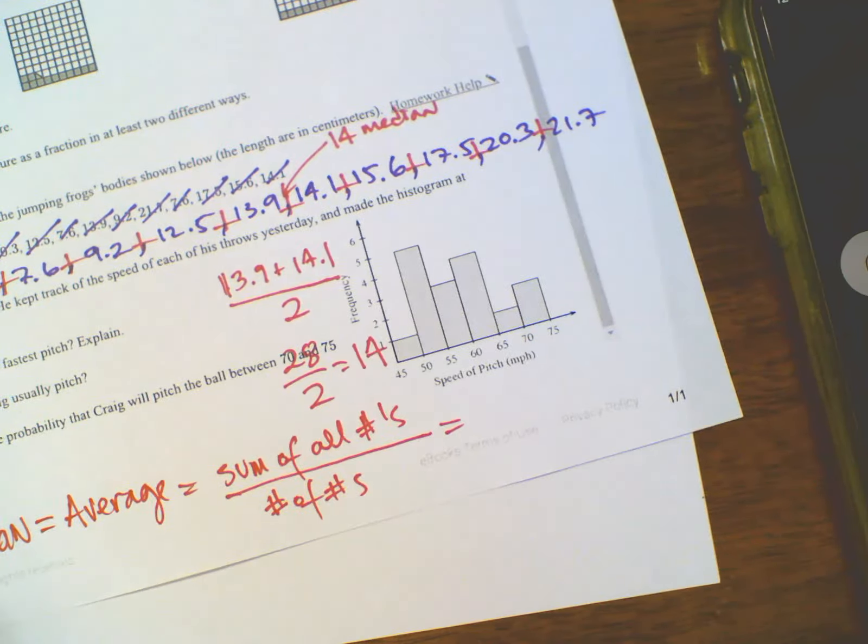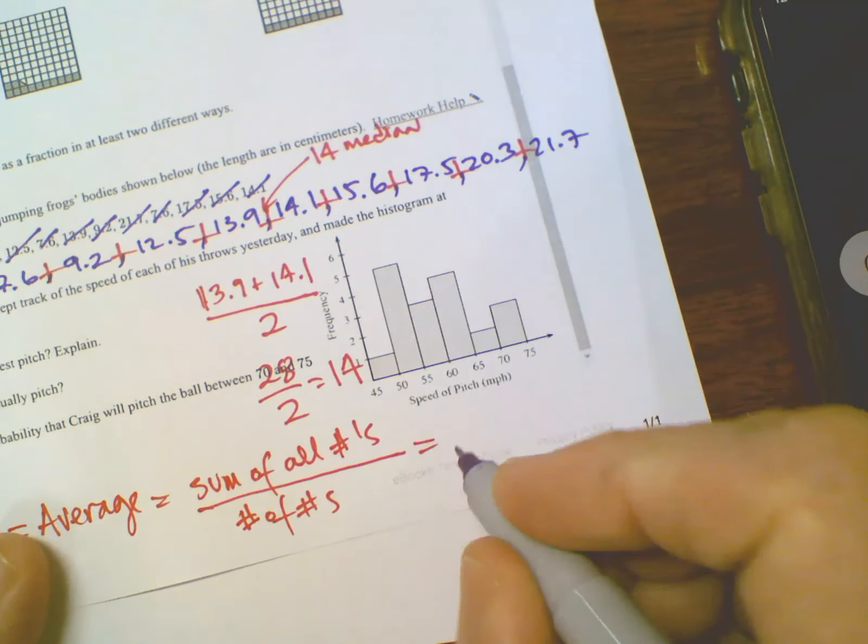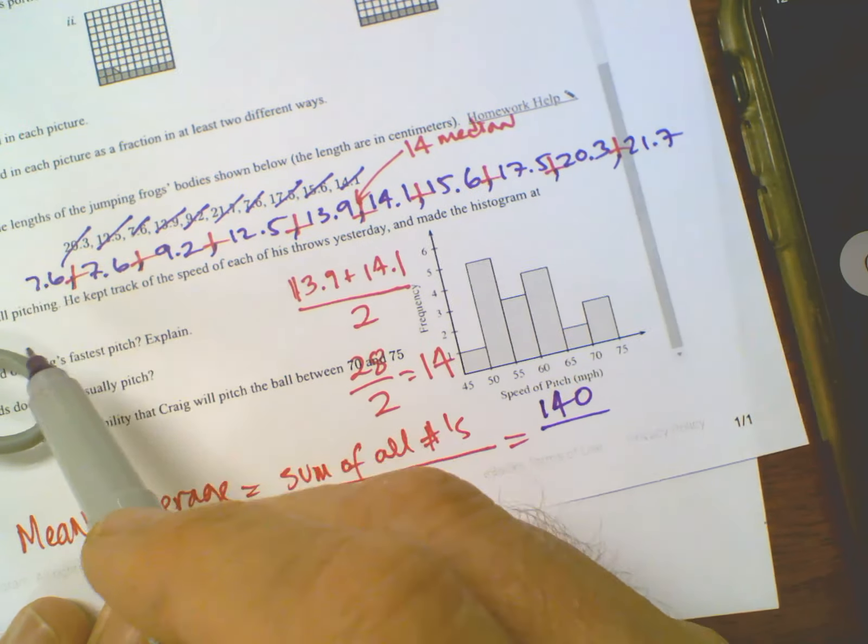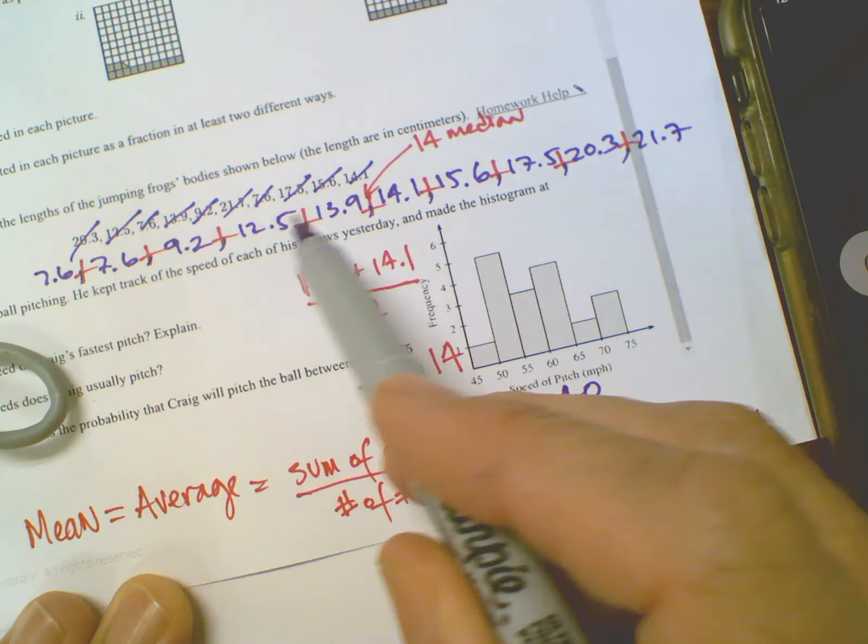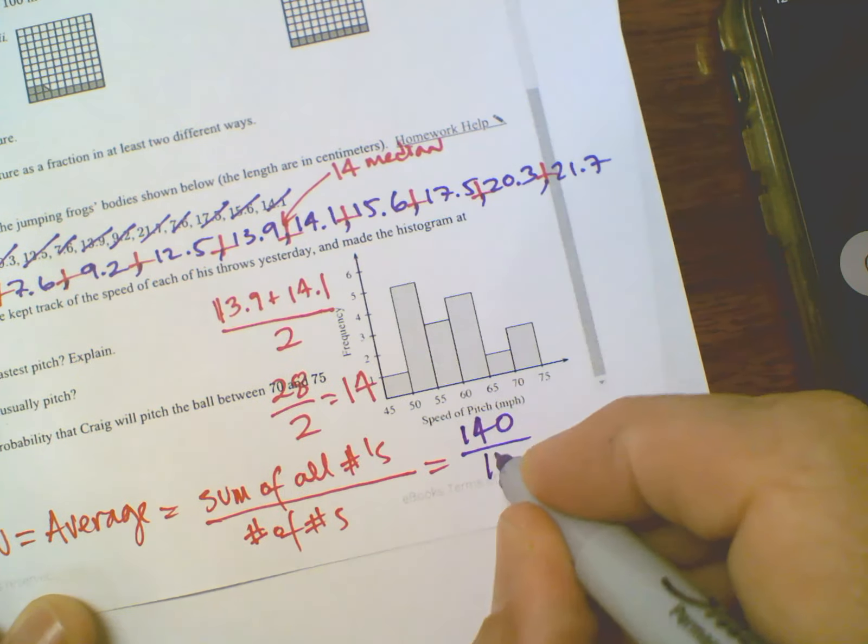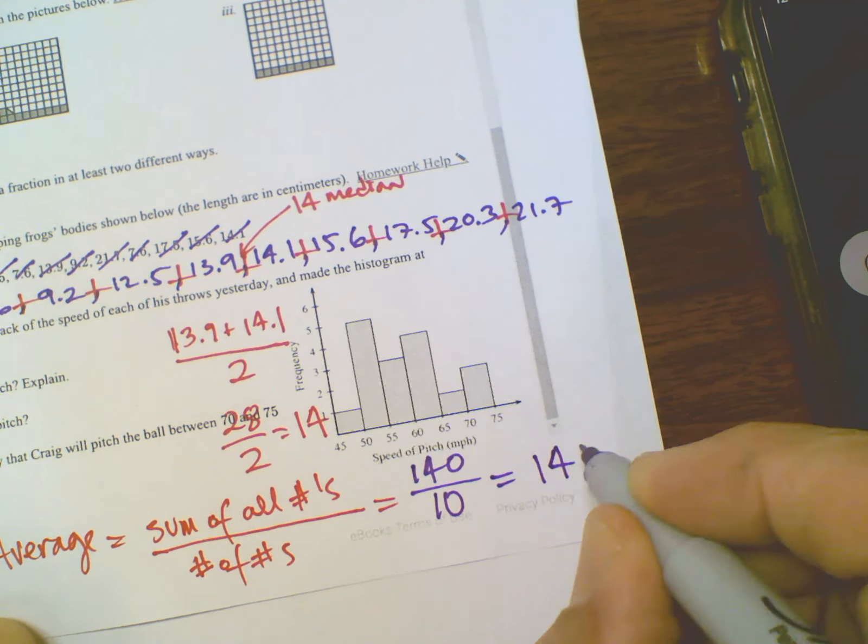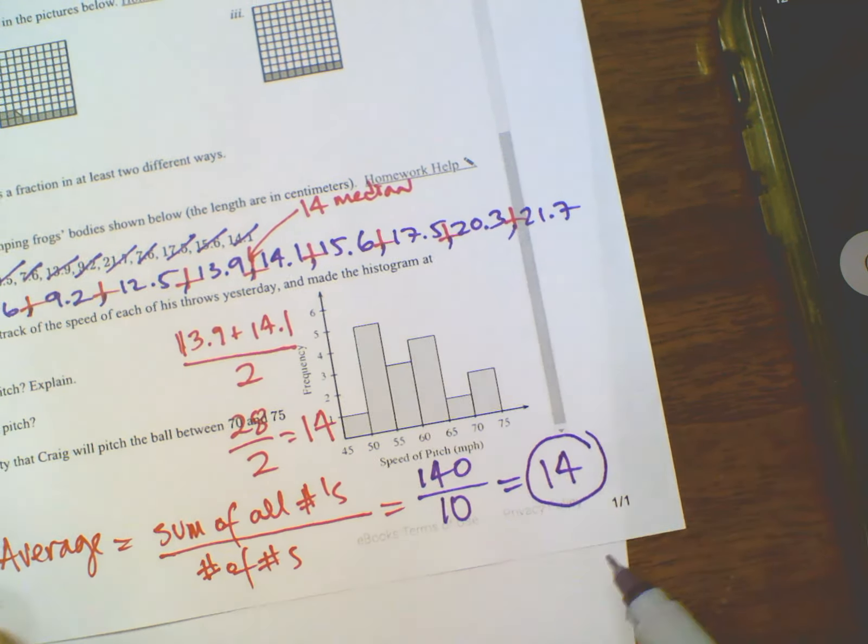So my sum of all the numbers is 140. And then the number of numbers, well, how many is there in my list? 1, 2, 3, 4, 5, 6, 7, 8, 9, 10. There's 10 numbers in the list. So 140 divided by 10 is 14. So the mean is 14.